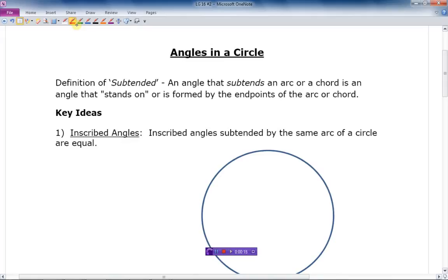I don't know why they use this word, but it sounds kind of complicated, but let me try to explain it. An angle that subtends an arc or a chord is an angle that stands on or is formed by the endpoints of the arc.